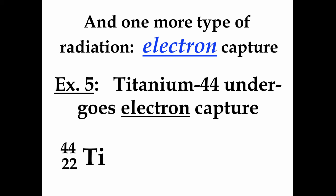So titanium-44, there's its nuclear symbol. Now it captures an electron, so it grabs its own inner shell electron. We actually have two starting materials, two reactants. But the same rules apply: charge has to balance, and mass has to balance. So 22 plus negative 1 adds up to 21. 44 plus 0 adds up to 44. And so when titanium-44 undergoes electron capture, it produces a nucleus of scandium-44.